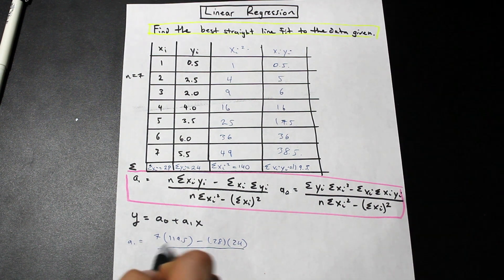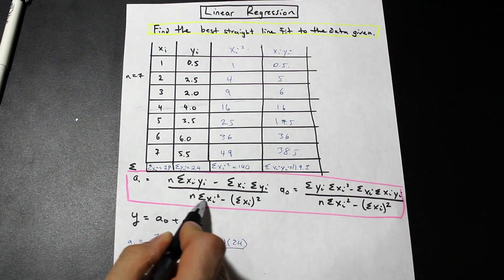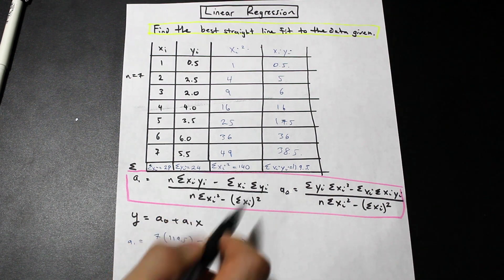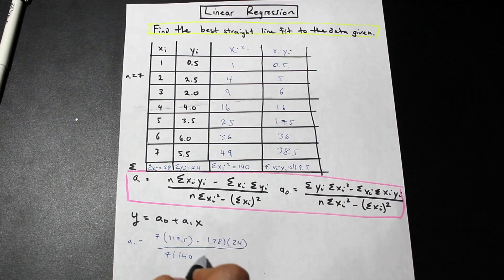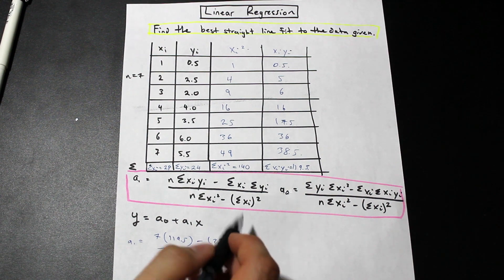And if we divide this whole thing by, we have n again there, times the summation of xi squared, that we have that as 140, right? So now you can really see how useful this table comes into play here.